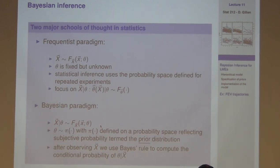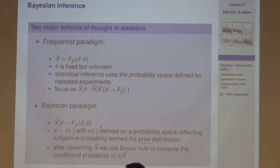We've talked about two ways to do estimation so far — D, which basically came down to weighted least squares.